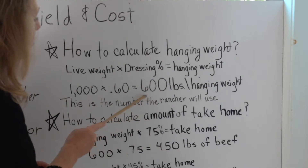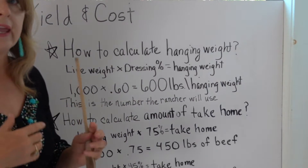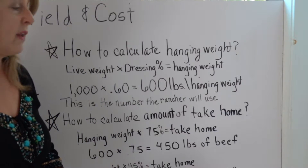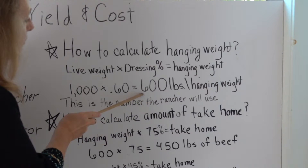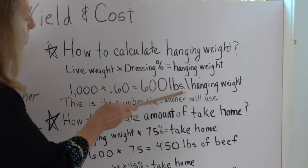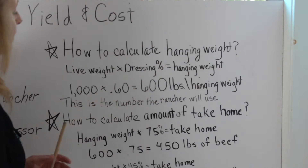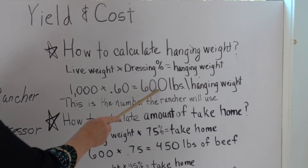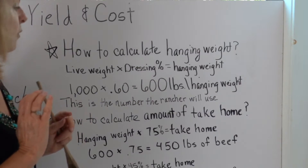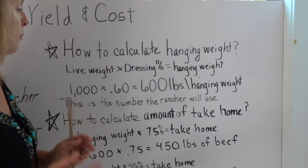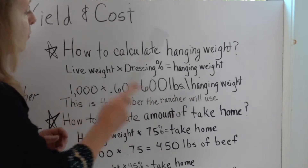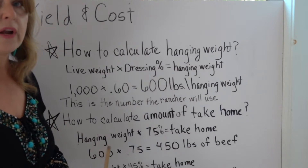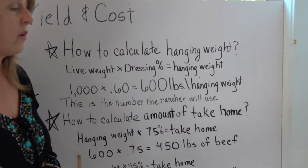This hanging weight number is what I charge my customers in my beef business. I tell them each year what the price per pound of hanging weight is going to be, and after the animal is processed, this is the number I use to charge them. My processor also takes this number and multiplies it times 95 cents — and that's before any extra charges, which we'll talk about later.